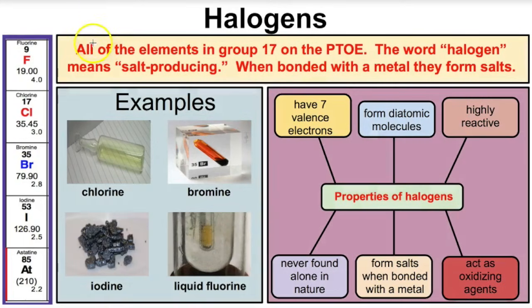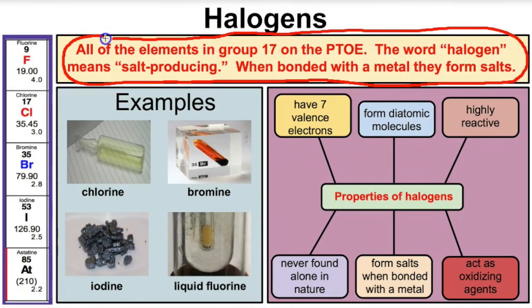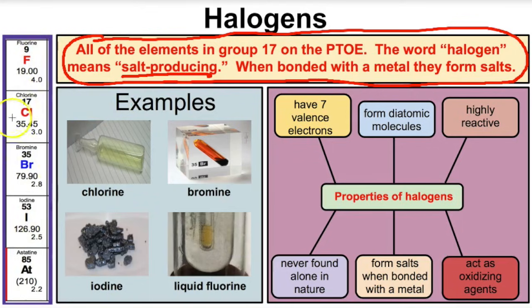Next we have the halogens — all the elements in group 17 on the periodic table. The word halogen means salt-producing, so when these react with metals they produce some sort of salt. Examples of halogens include fluorine, chlorine, bromine, iodine, and astatine — all non-metals in group 17.